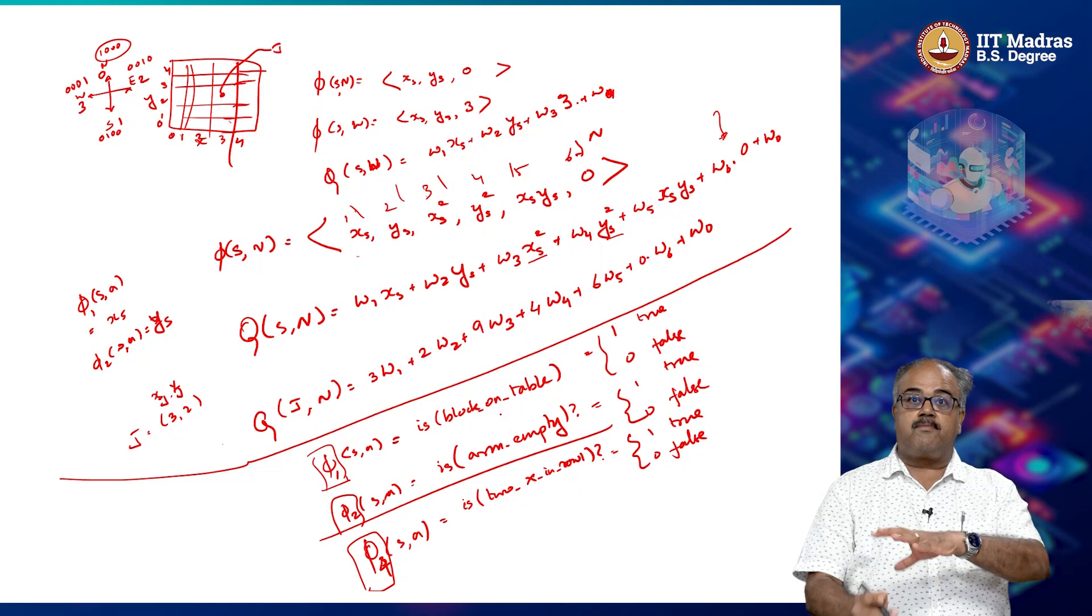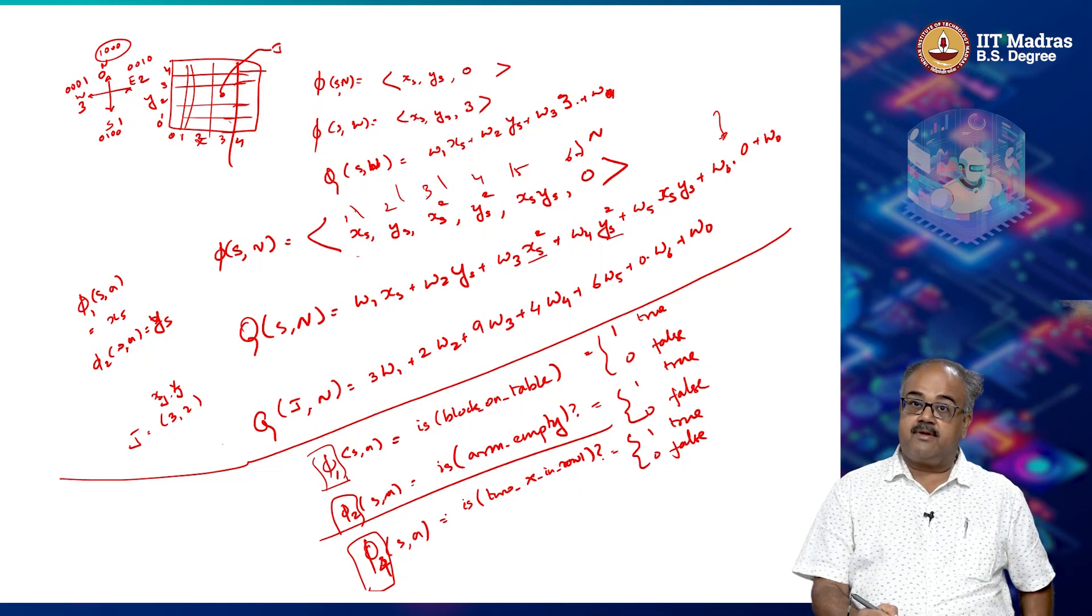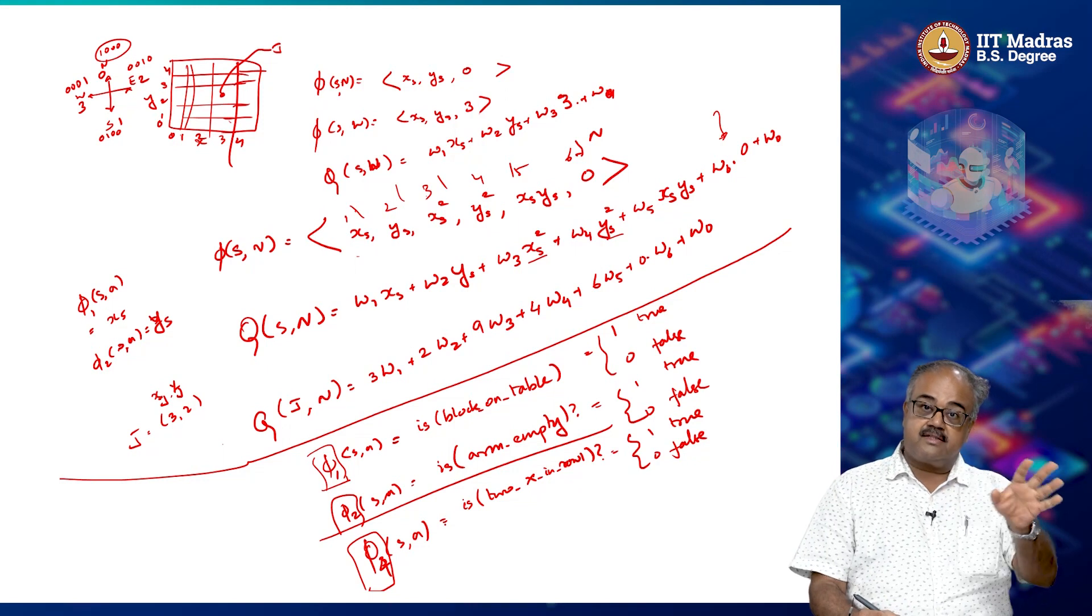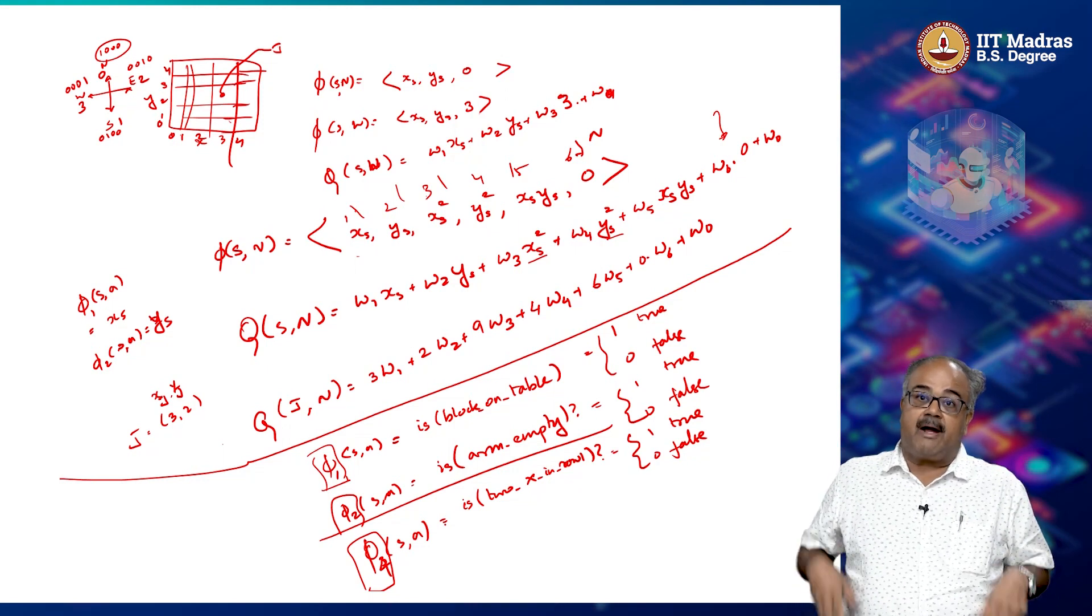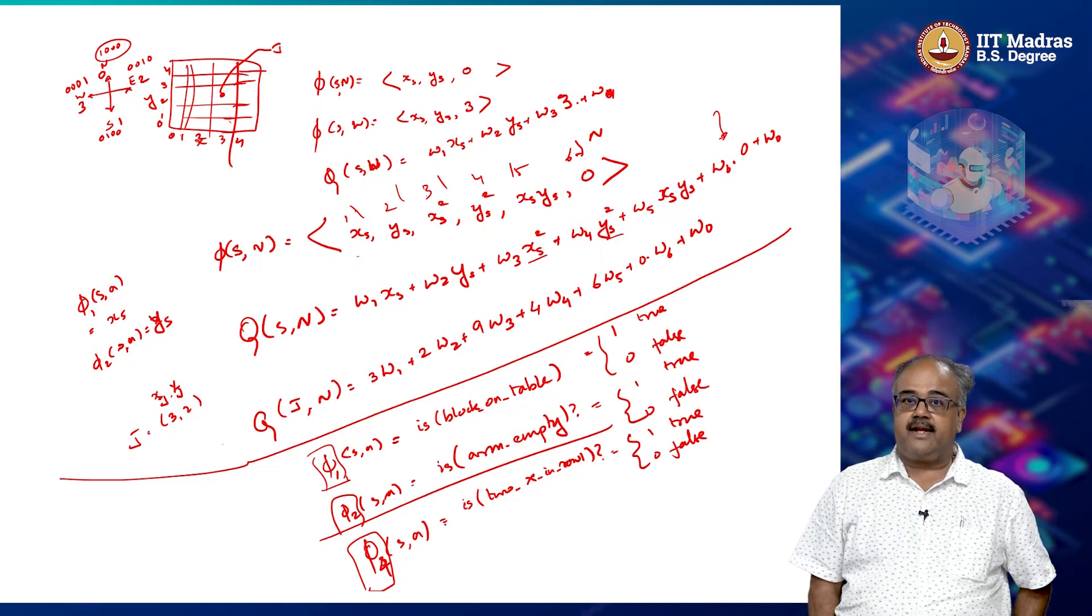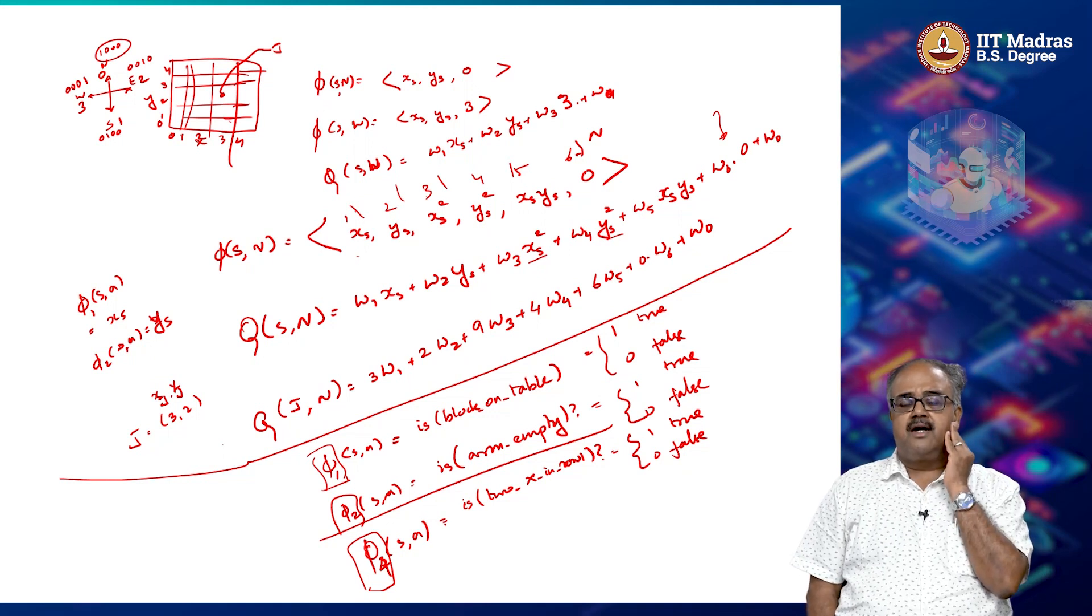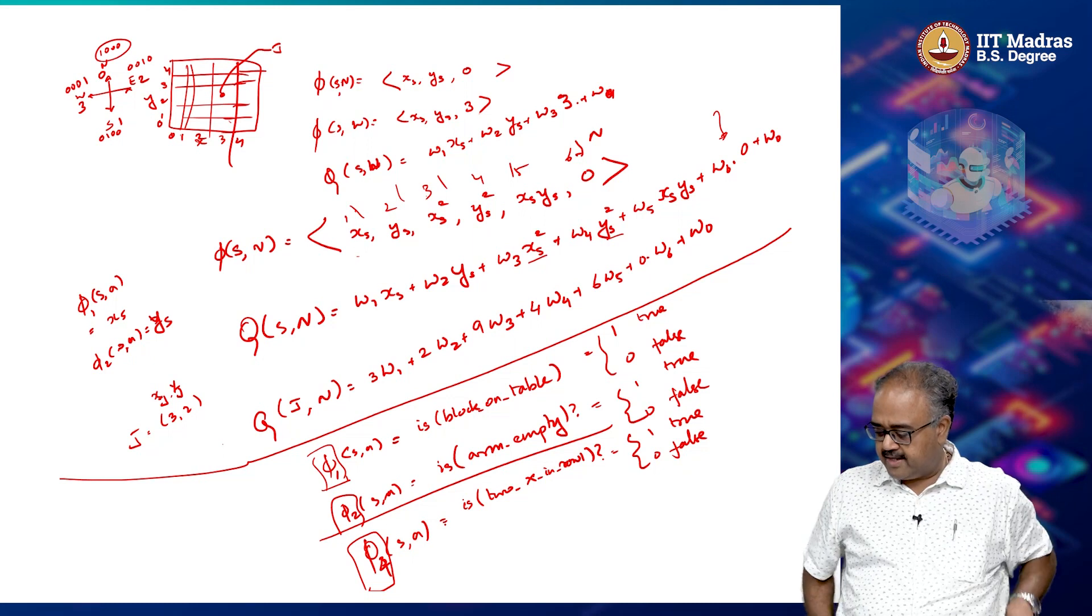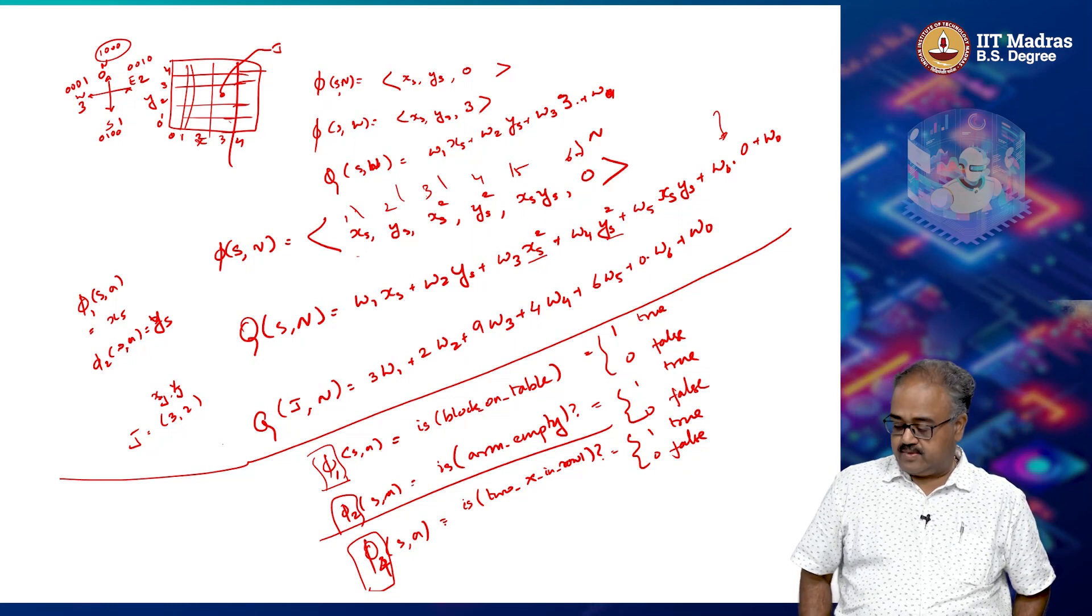And likewise, when I start looking at some robot problem, I could just even say things like is the block on table can be a feature. Or is am I hitting an obstacle can be a feature and so on. Apart from the x and y locations of the robot or some kind of a sonar reading, how strong is the sonar reading or how strong is the some laser signal coming in and all of those things can be potentially looked at as well.